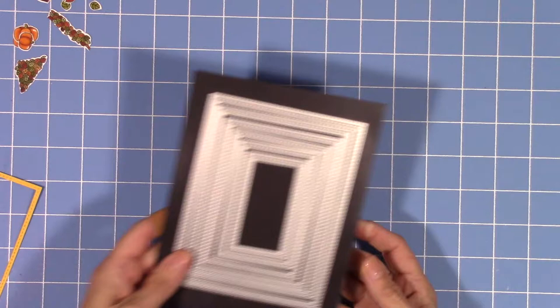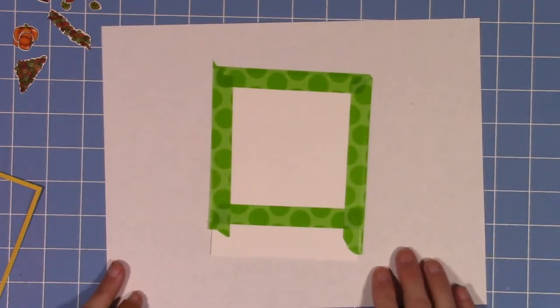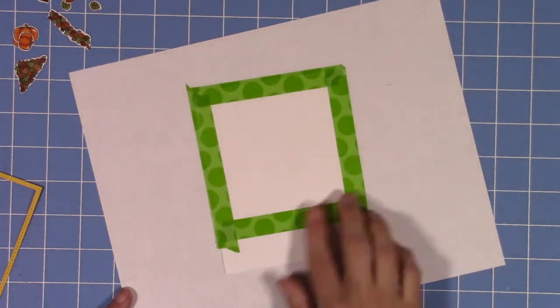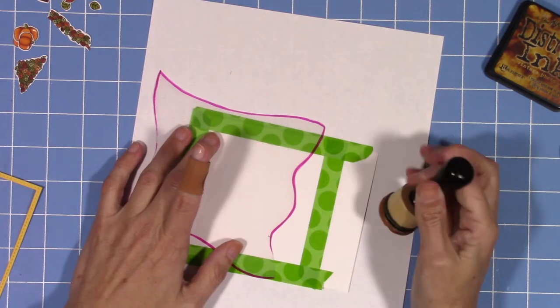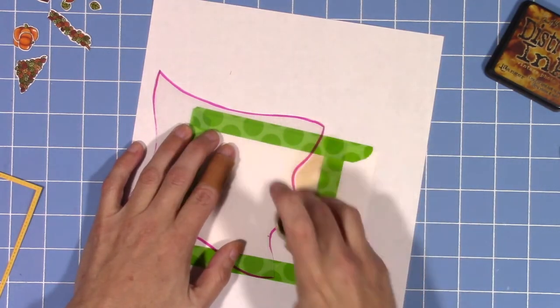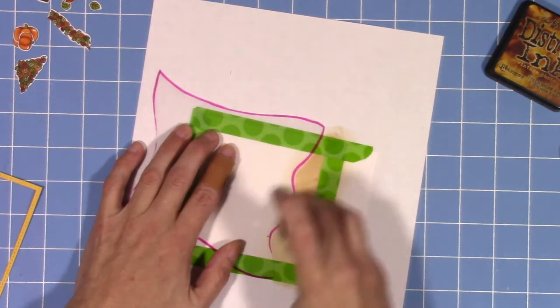I'm also going to use the same stitched rectangle die just like normal and I'm going to take my piece and make the inside of my window. I want to make it not too fancy because this is the shaker part that's going to go on the inside.